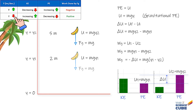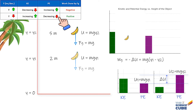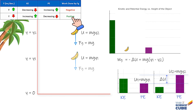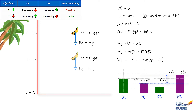Likewise, when y reduces, the potential energy reduces and the work done by the force is positive. If y1 was 6 meters and then reduced to 4 meters, this quantity would be positive — work done is positive. This aligns with the fact that the force is increasing the kinetic energy of the object, and therefore doing positive work. Whether you express work done in terms of change in kinetic energy or change in potential energy, you get the same answer.